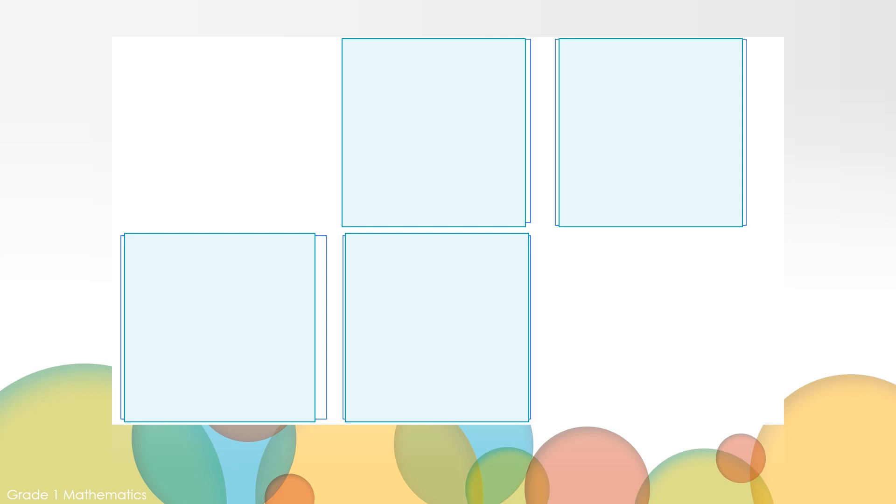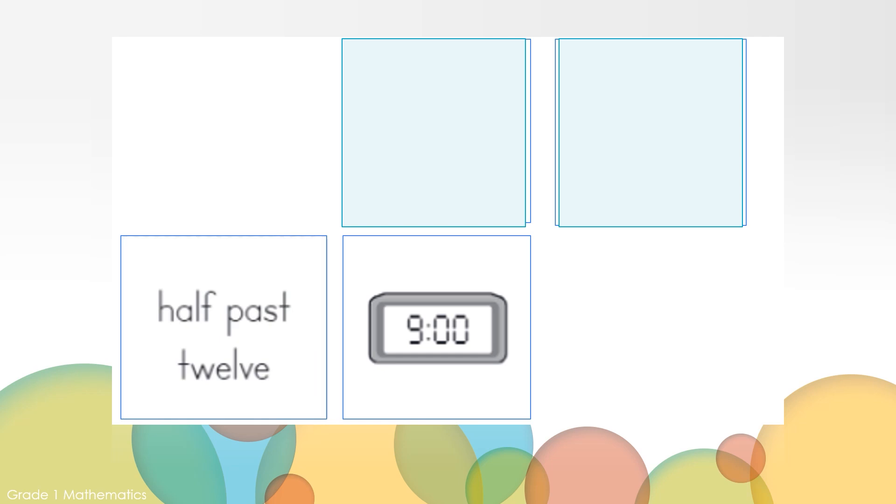Let's turn over another card. What time is on the clock? This digital clock shows the time of 9 o'clock. Let's see if we can find a match. What does this card say? Half past 12. We did not find a match. Let's keep trying.